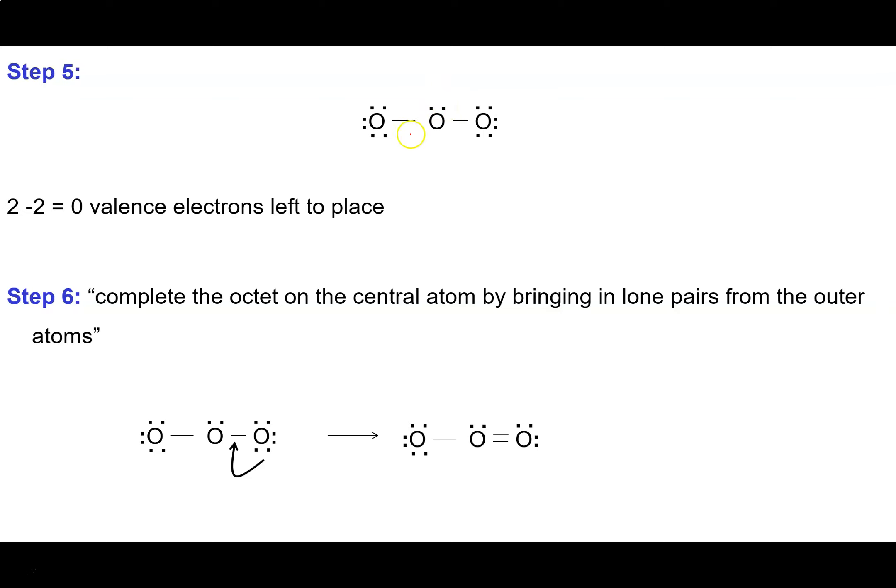We put those 2 electrons on our central atom. Now we check the octet of our central atom, and what we find is that it only has 6 electrons around it: 2, 4, 6. So we need to complete the octet by bringing in one lone pair. Do you bring the lone pair in from the left or from the right, or does it not make any difference?